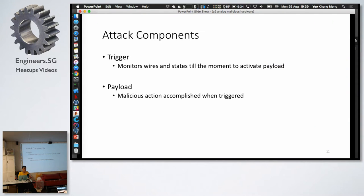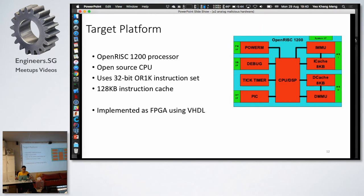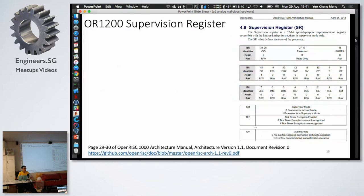Now we come to the attack component. Attack components are divided into two parts, the trigger and the payload. The trigger is, you can think of it like somebody pushed a button. In this case, the trigger monitors the wire to know when is the moment to activate the payload. The payload is basically something that is bad, something bad that is done. Malicious action accomplished when you engage the trigger. More about the target platform they chose. This is an OpenRISC 1200 processor. It's open source. They use a special instruction set like OR1K, not ARM and not x86. It's a very small instruction cache. This is entirely implemented in FPGA using VHDL. The reason they chose this is because it's open source. They can just make the modifications easily to this.